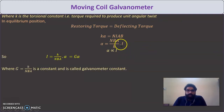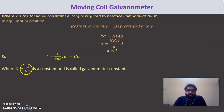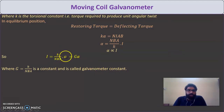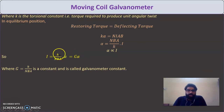Rearranging, current I = (K/NBA) × α = G × α, where G = K/(NBA) is called the galvanometer constant. All quantities N, B, A, K are constant; only current and angular deflection change. So I = Gα is a very important formula, and G = K/(NBA) is the galvanometer constant.